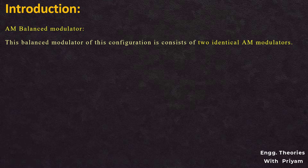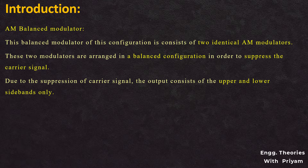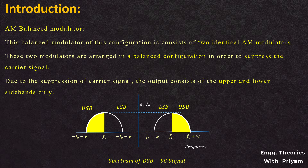The balanced modulator of this configuration consists of two identical AM modulators arranged in a balanced configuration in order to suppress the carrier signal. Due to the suppression of the carrier signal, the output signal only consists of upper and lower sidebands — that is, a DSBSC signal is generated.